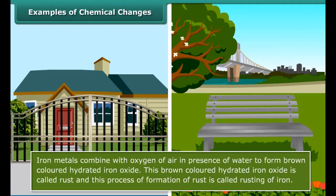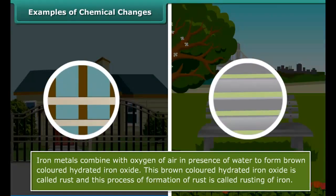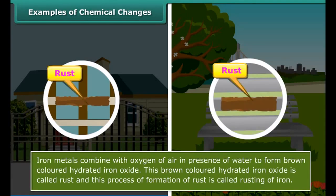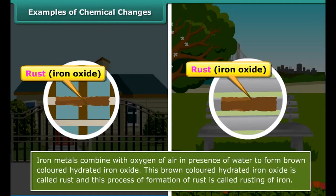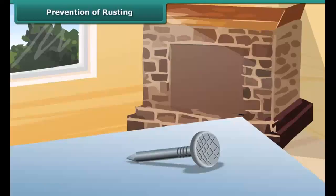Have you seen an iron gate or iron bench in a garden with a brownish film on it? This brownish film is called rust, and the process of formation of this film is called rusting. The chemical name of this rust is iron oxide. Rusting occurs in the presence of oxygen and moisture.